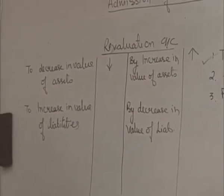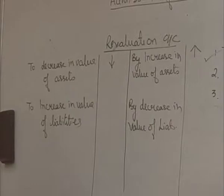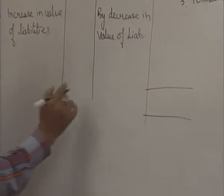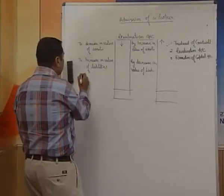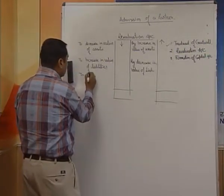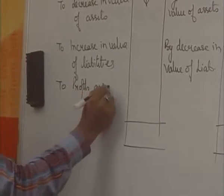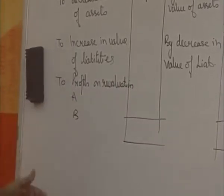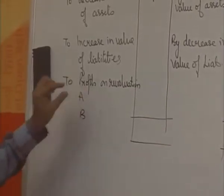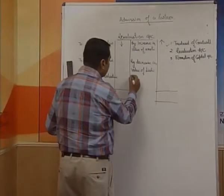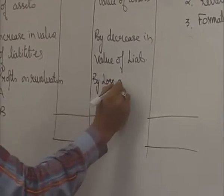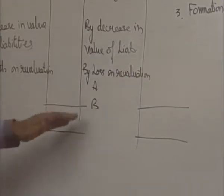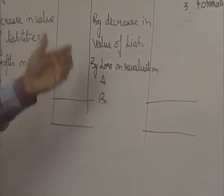Now, make the total of both sides; whichever side is greater, that same total is shown on the other side. For example, if the credit side total is more, the same total is written on the debit side, and the balancing figure is taken as profit on revaluation. Whatever profit is there, distribute it among old partners A and B in their old ratio. In case the debit side is more, we suffer a loss — the value will be 'loss on revaluation' — and similarly distribute that loss among the partners in their old ratio.